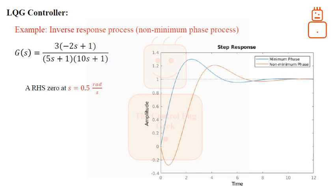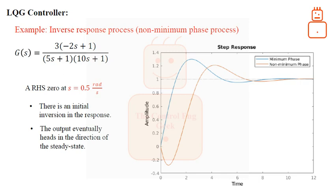The response of the non-minimum phase system has an initial inversion, meaning that the process starts moving away from its ultimate value. The output eventually heads in the direction of the final steady state. This imposes a fundamental limitation on the control strategy used to control this type of process. High controller gains will induce closed-loop instability.